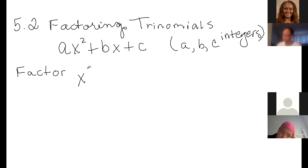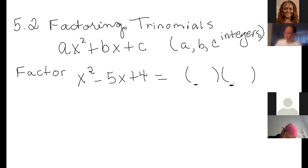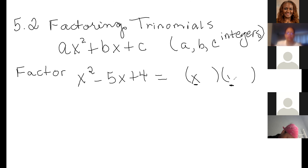Take this trinomial X² minus 5X plus 4. Our objective in 5.2 is to find out the factors of that trinomial. If you look at the two first factors — because when you multiply them they have to give X² — those are going to be X and X.